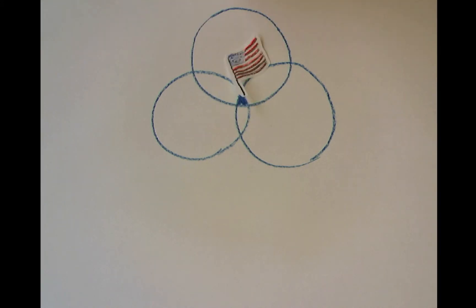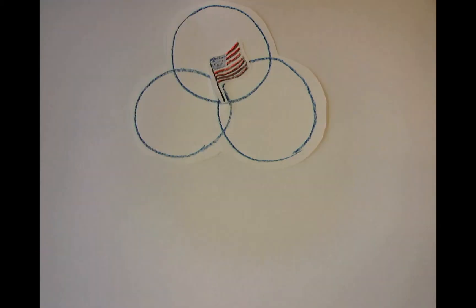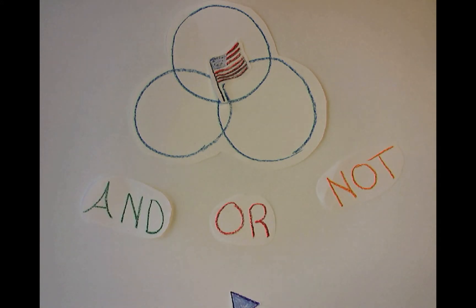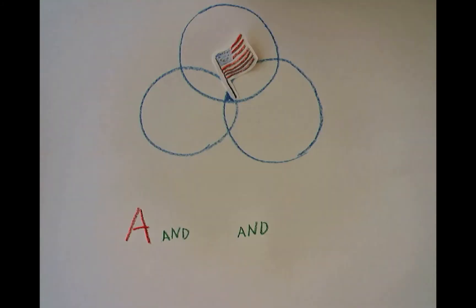The logical combination gives us a way of formally representing the portion of the database we want to retrieve — where all three facets A, B, and C are present. We insert the Boolean AND operator in between each facet and combine them in the Boolean expression: agrarian economy AND colonies AND American Revolution, or more simply, A AND B AND C.